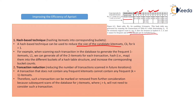The second technique is transaction reduction: reducing the number of transactions scanned in future iterations. A transaction that does not contain any frequent item set cannot contribute to frequency of an item. Therefore, such a transaction can be marked or removed from further consideration, because subsequent scans of the database for a j-th item set where j is greater than k will not need to consider such a transaction.